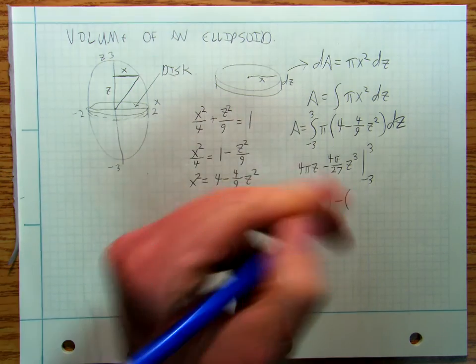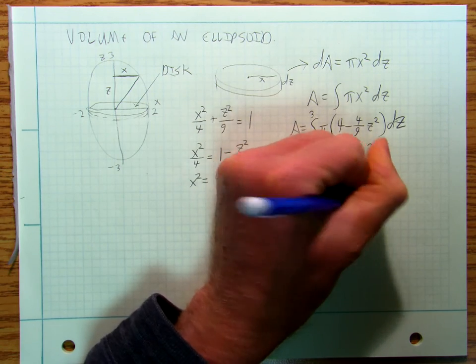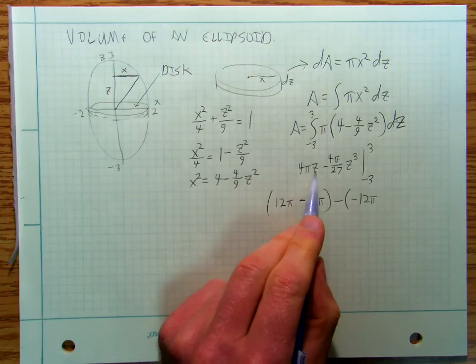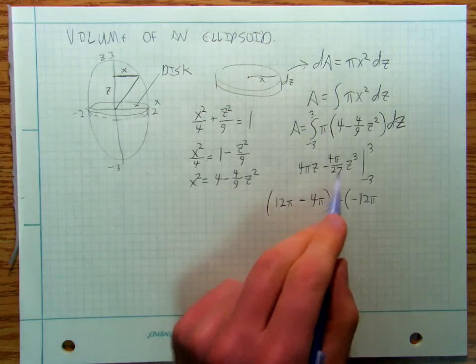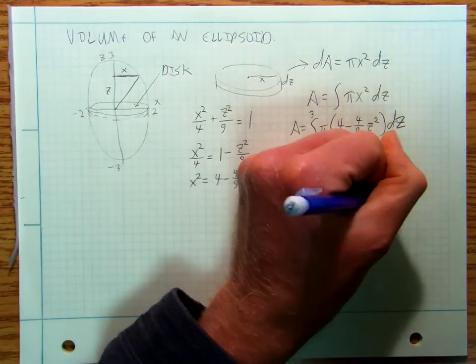So I'm going to get minus 4 pi minus, if I plug in negative 3, I'm going to get minus 12 pi. And I'm going to get, that's also going to be plus 4 pi.